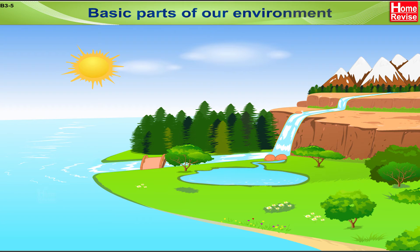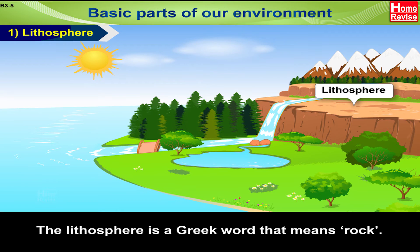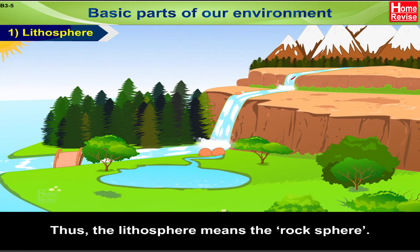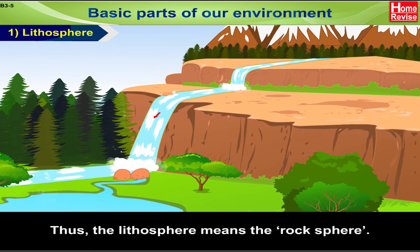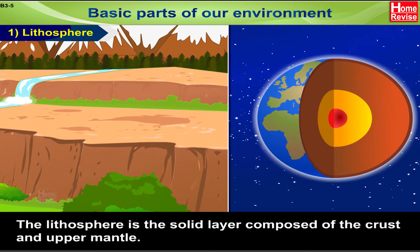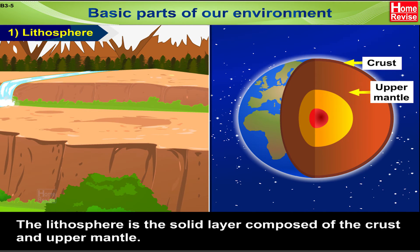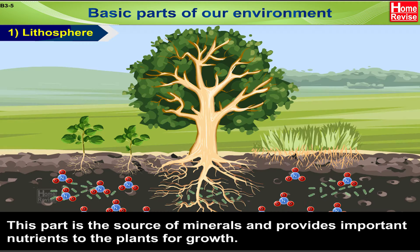Basic parts of our environment. 1. Lithosphere: The lithosphere is a Greek word that means rock. Thus, the lithosphere means the rock sphere. The lithosphere is a solid layer composed of the crust and upper mantle. This part is the source of minerals and provides important nutrients to the plants for growth.